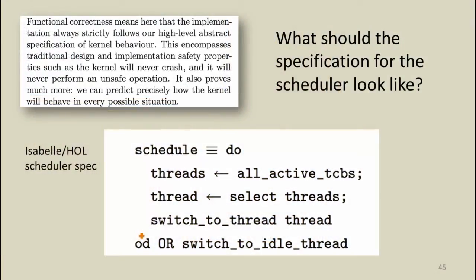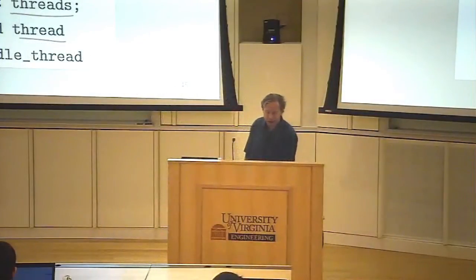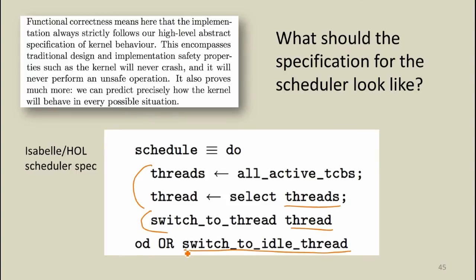What should the specification look like for the properties being proved? For the scheduler, the spec at a high level says: every time we schedule, we select some thread from the set of available threads and switch to it, or switch to idle. That might sound like a weak guarantee, but it also guarantees that the scheduler always finishes and always picks some thread or the idle thread — which is actually quite a strong property. The scheduling policy itself is something you really want outside the microkernel.